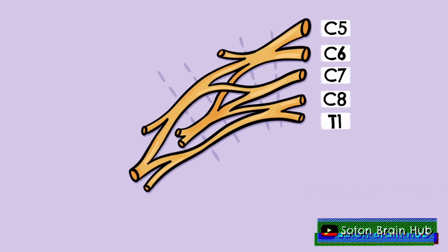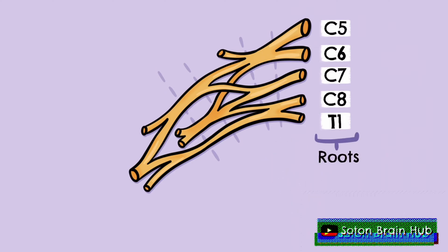Firstly, ventral rami exiting spinal segments C5 to T1 form roots, with one root for every spinal segment. These roots are named after the corresponding spinal segment. For instance, the root originating from the C7 spinal segment is termed the C7 root.